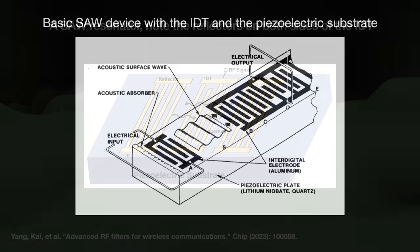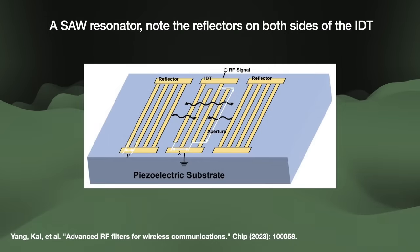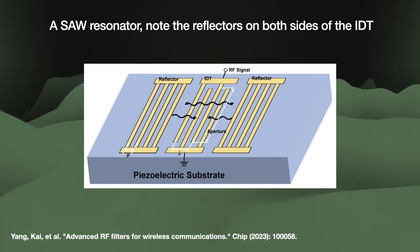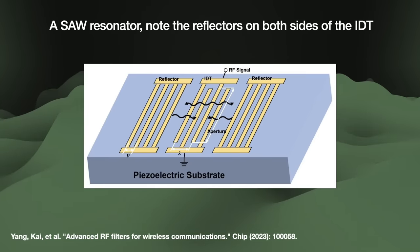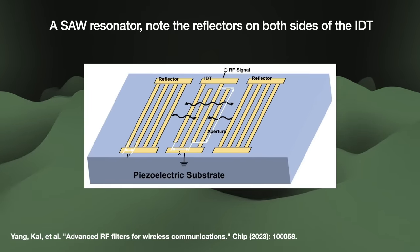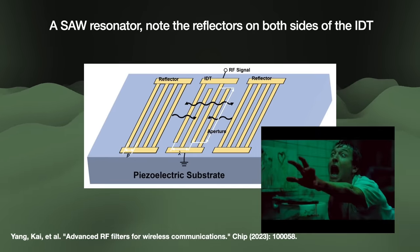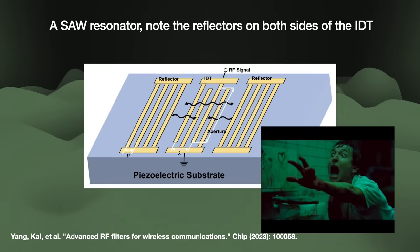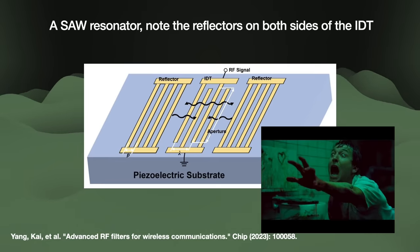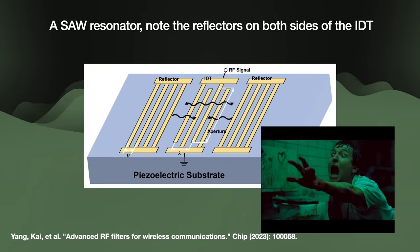Some devices add what are called reflectors to both sides of the IDT. The waves will reflect back and forth between those reflectors, trapped inside the filter — like, spoiler for a 20-year-old movie, that guy at the end of the first Saw movie. Game over. Such devices are called surface acoustic wave resonators.